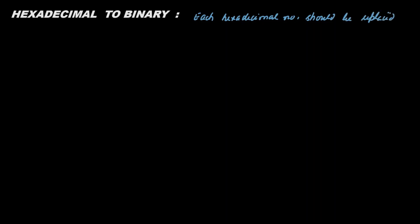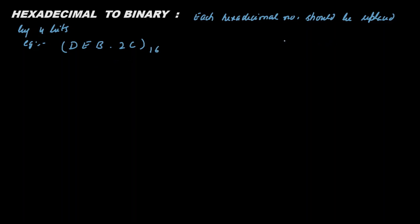Let us take one example. Suppose we have the hexadecimal number DED.2C. For simplicity, you can draw a table of 4 bits with the hexadecimal number on one side.